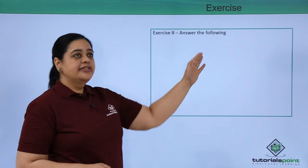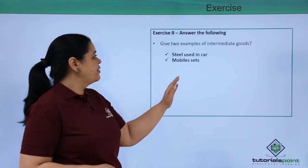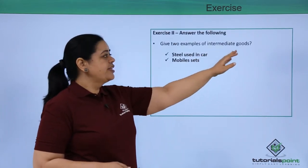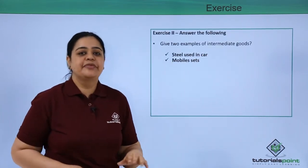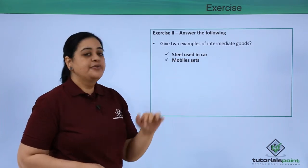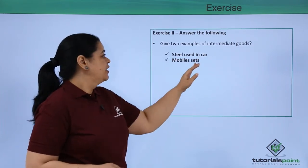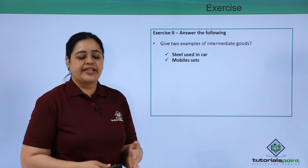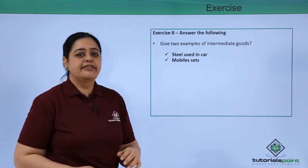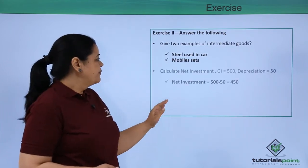Next exercise: we've been asked to provide examples of two intermediate goods. Steel used in cars is one example, and mobile sets are another example.